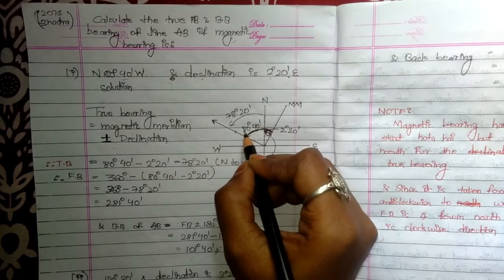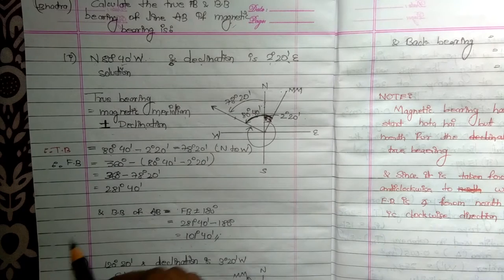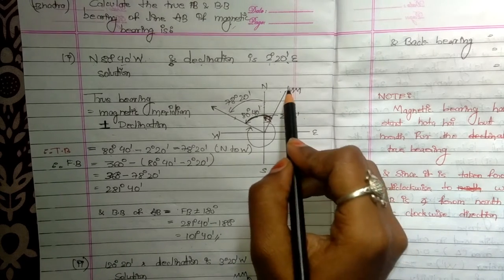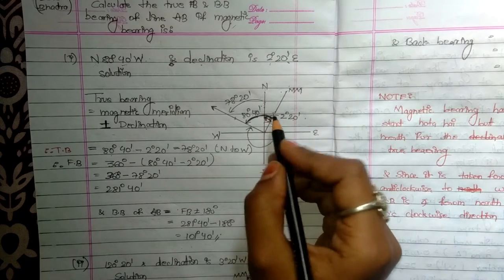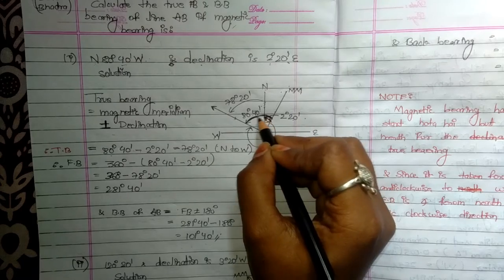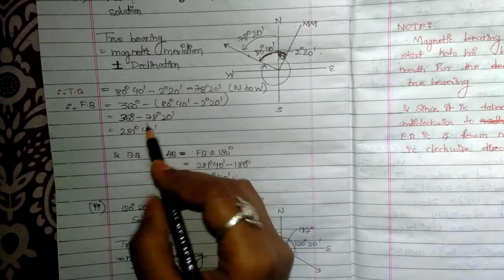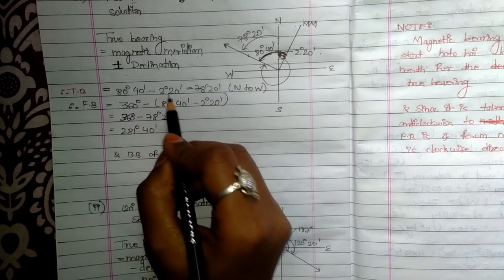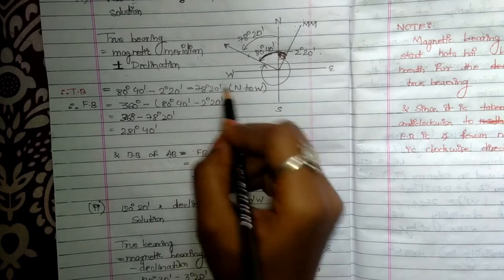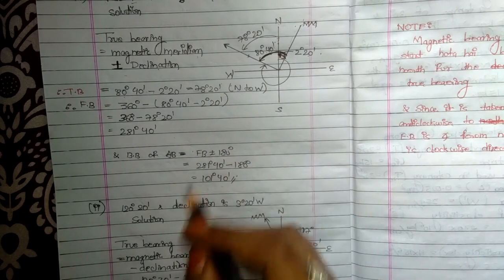According to the figure, the angle from the magnetic meridian is 80 degrees 40 minutes. Now, true bearing is always measured from true north, not assumed north. So we minus the declination: 80 degrees 40 minutes minus 2 degrees 20 minutes equals 78 degrees 20 minutes, north to west. That is our true bearing.